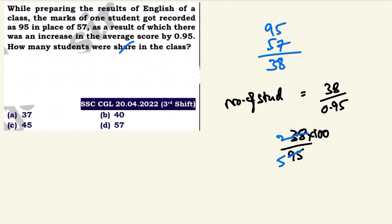Number of students equals 38 divided by 0.95. So we calculate: 38 divided by 0.95 equals 40. So there were 40 students in the class.